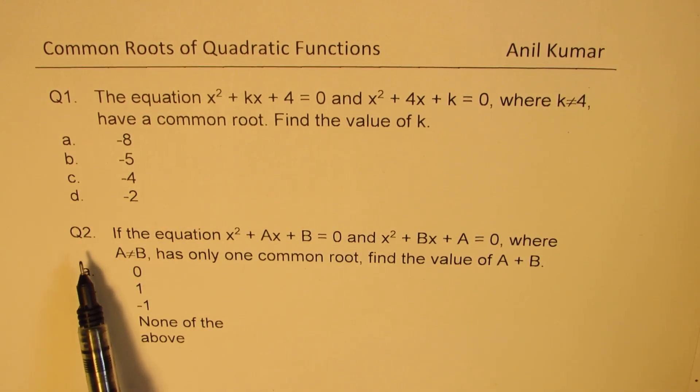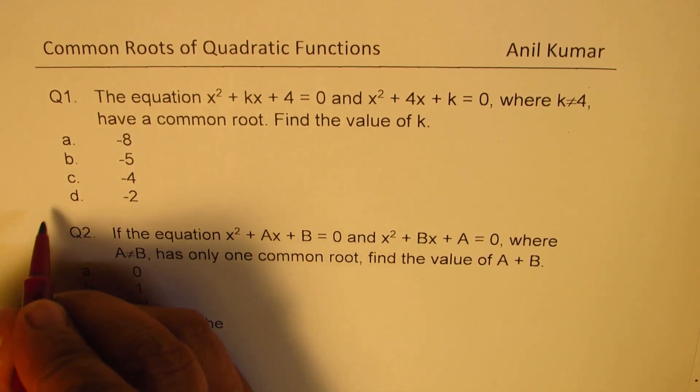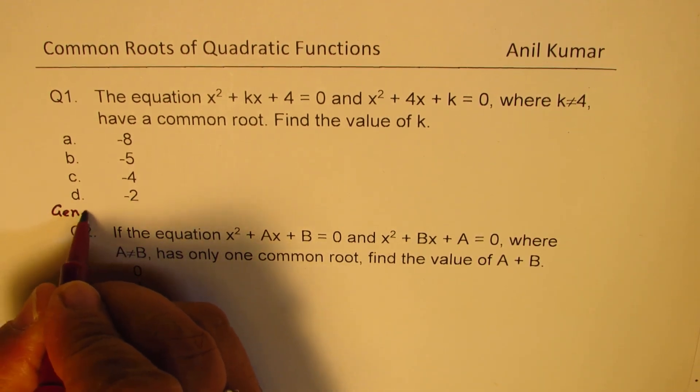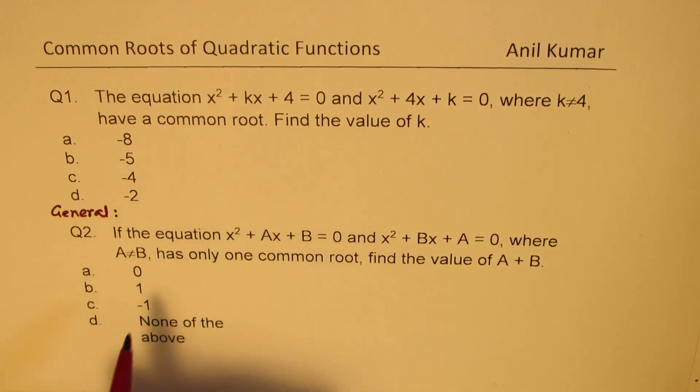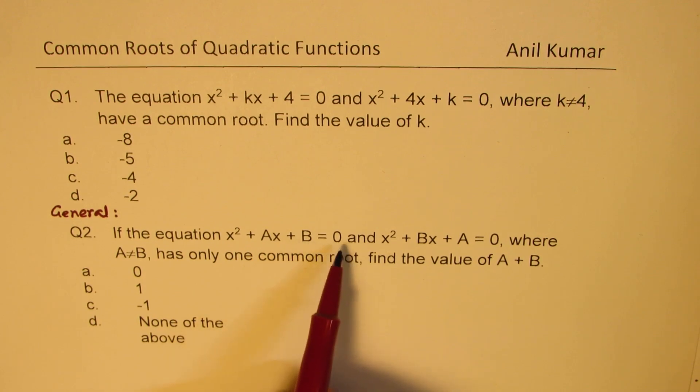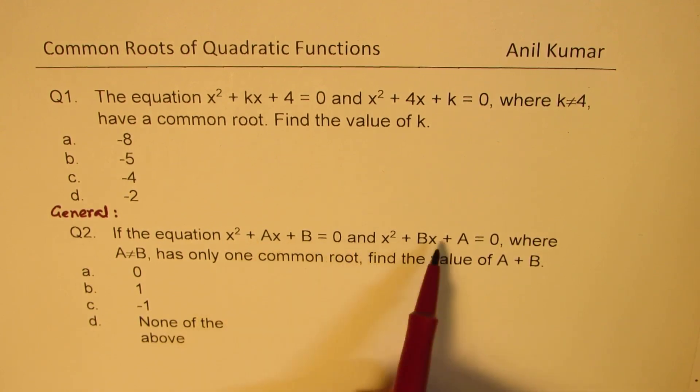Question number two. Now, this is a general equation. So what we have done is we have made a general case. It says if the equation x² + ax + b = 0 and x² + bx,